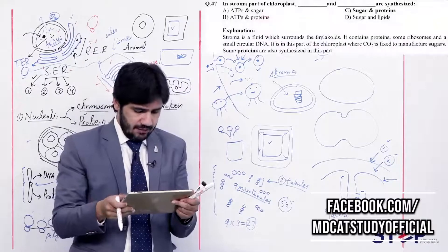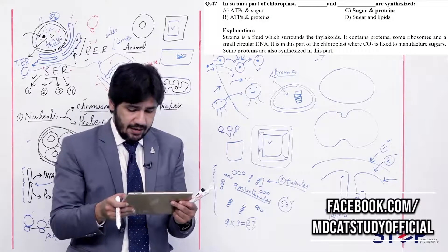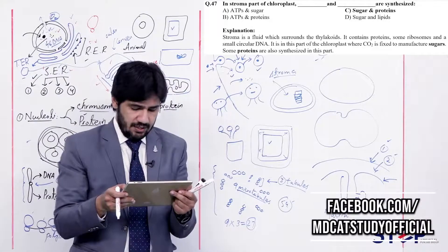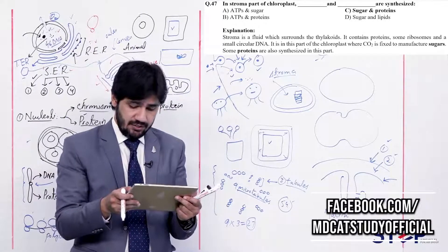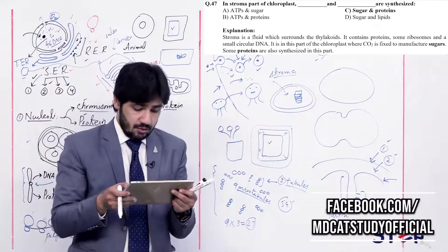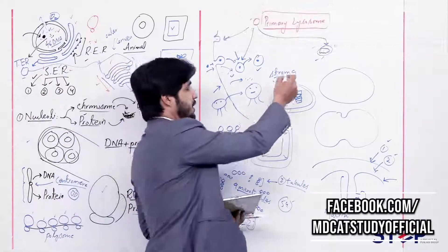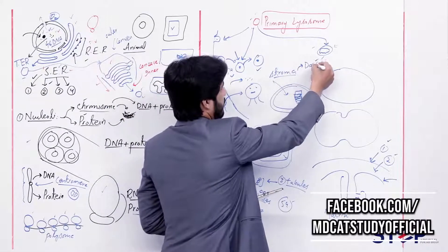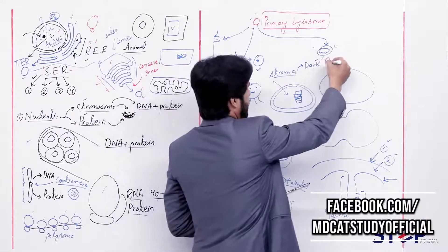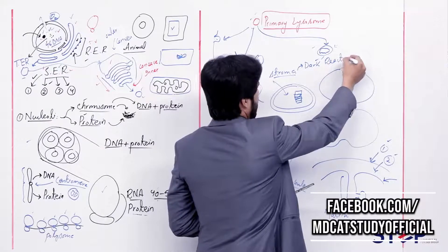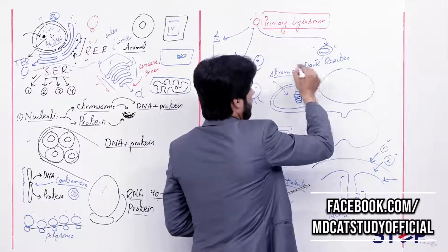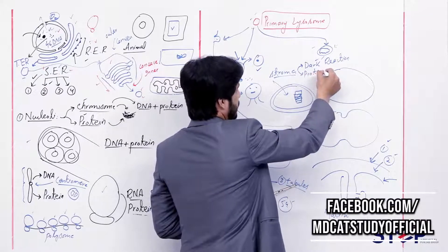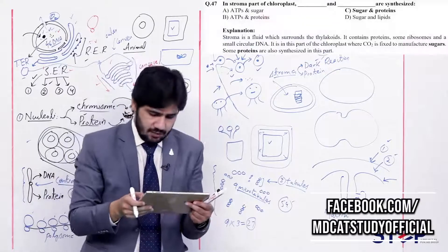Question 47: In the stroma part of chloroplasts, blank and blank are synthesized — (alpha) ATP and sugar, (beta) ATP and proteins, (charlie) sugar and proteins, (delta) sugar and lipids. In the stroma, two events occur: dark reactions (Calvin cycle) produce carbohydrates (sugar), and ribosomes present in the stroma synthesize proteins. So the right answer is charlie — sugar and proteins.